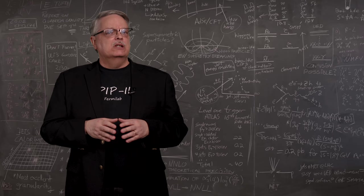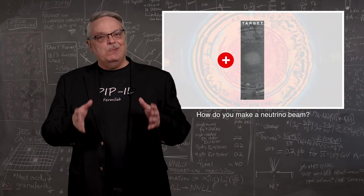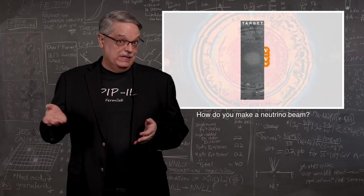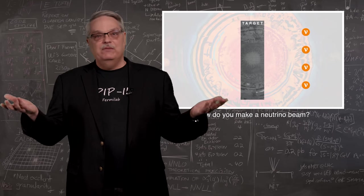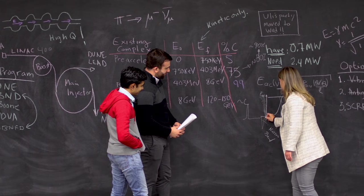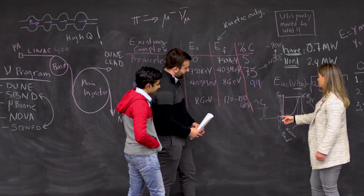The way you make a beam of neutrinos is to accelerate a beam of protons to very high speeds and smash them into a target. Protons in, and after a few intermediary steps, neutrinos come out. That's how it works. I even made a video on the process. So Fermilab scientists started looking into how they could generate more intense beams of protons.